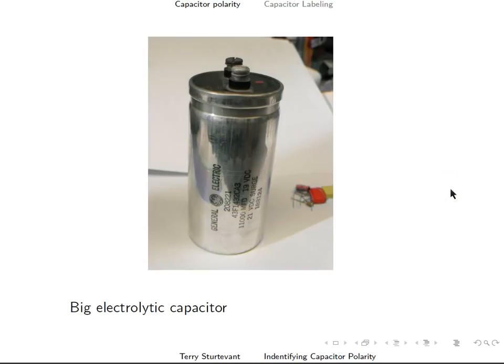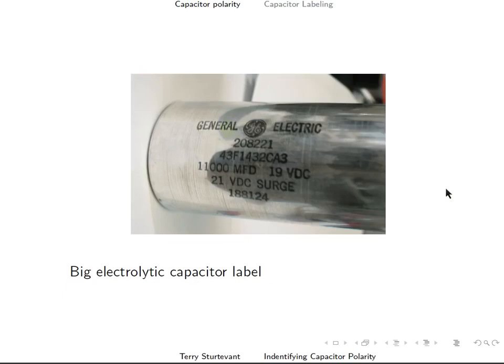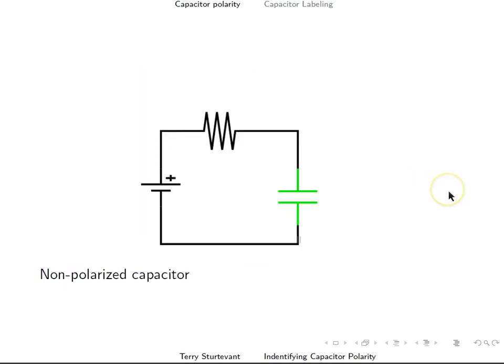Here's a big electrolytic capacitor. Here's what it looks like from the top, and here's the label on the side. You can see it's 11,000 microfarads, so that's big.